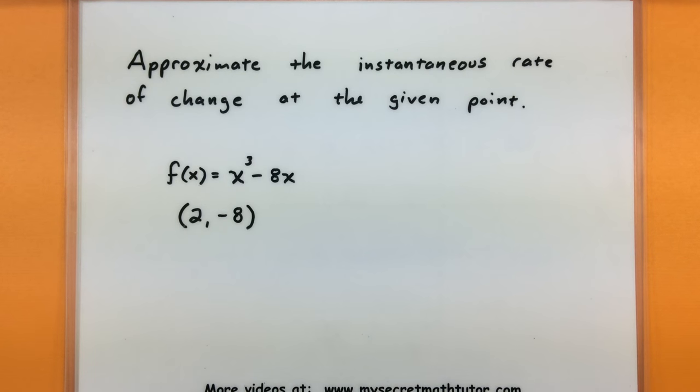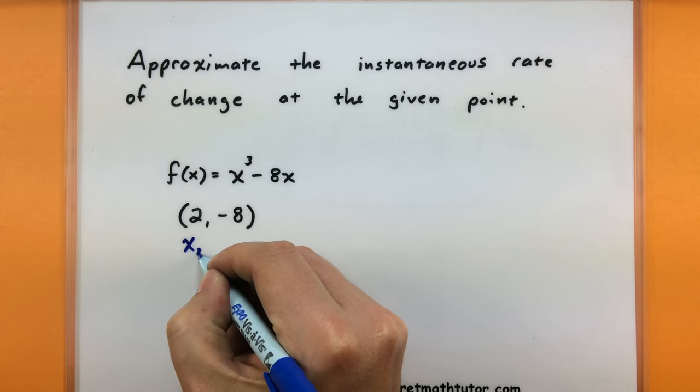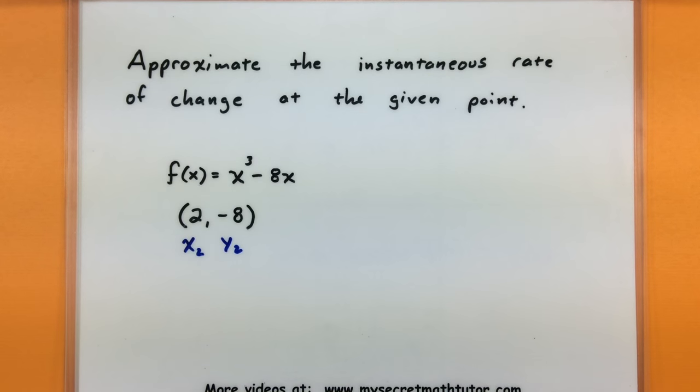Since we have to use our slope formula, you really want to consider your given point like a given x value and a given y value that you already know about. So what we need is another x and y value pair so that we can begin finding the slope.